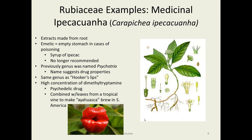Another medicinal usage is the ipecacuanha plant, Carapichea ipecacuanha, used to make syrup of ipecac, which was used in cases of poisoning to force vomiting to expel the poison. It's now felt it probably causes more damage than it helps, so it's no longer recommended as an emetic. This genus was previously called Psychotria, which suggests the drug properties of this group — and the hooker's lip flower is also in this genus.